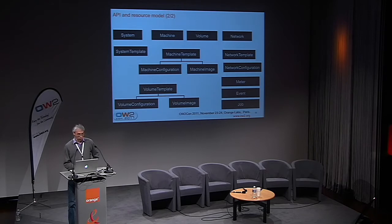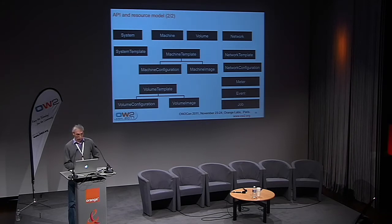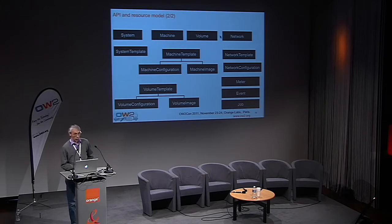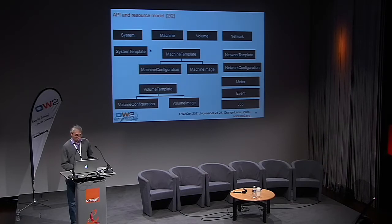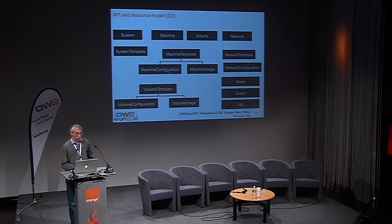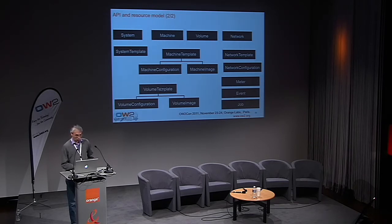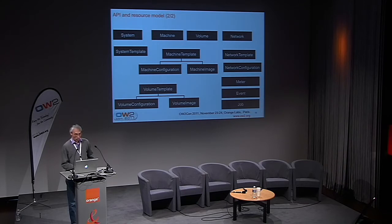Now, a very quick view of the resource model underpinning the CIMI DMTF API — an informal view, not a UML diagram. On the top you'll find the runtime resource entities: the usual specs for machine, volume, network, and so on. A system in DMTF terminology is an appliance. A pattern used in this resource model is to associate a template with each type of resource — you'll find a machine template for a machine, with a machine configuration stating the CPU, disk, RAM capabilities, and the machine image. The same pattern applies for volume and so on. Worth mentioning also is a meter abstraction that allows access to metering information on resources.